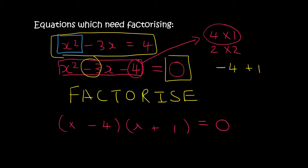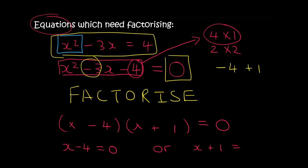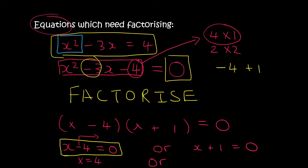This is slightly different to when we did factorizing, because now we're doing factorizing with equations. When you have these brackets, you then say x minus 4 must be equal to 0, or x plus 1 must be equal to 0, and then you solve each one separately. You take the 4 over, so x equals 4. Or x equals minus 1. So we get two answers. That is because of the x squared — that tells you how many answers you will get.